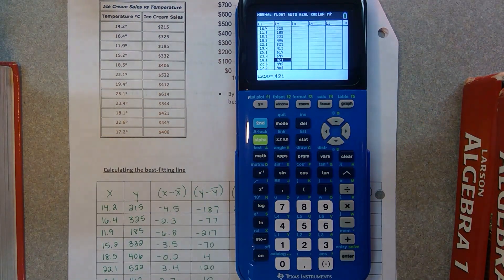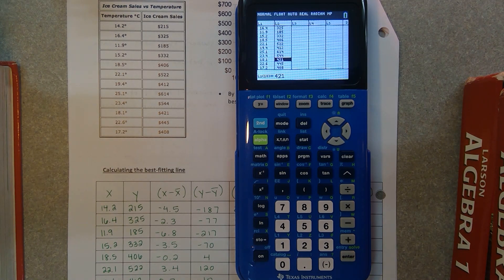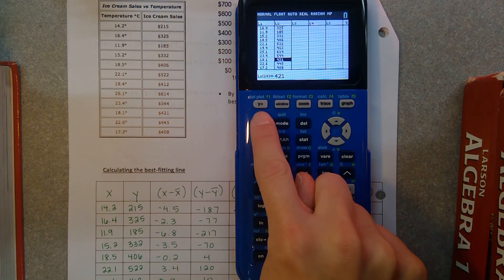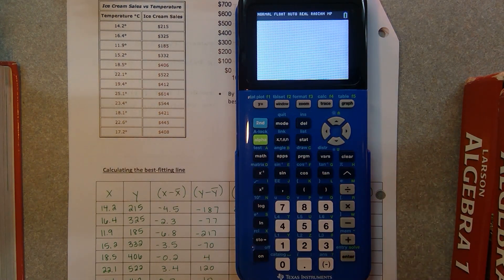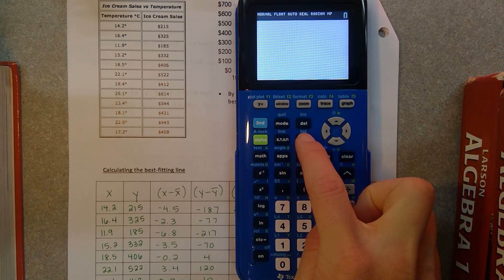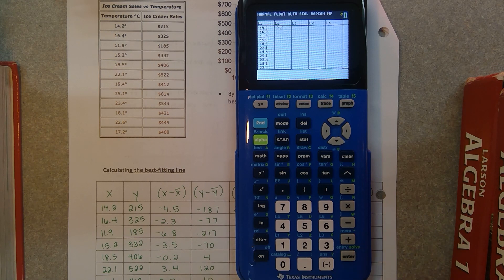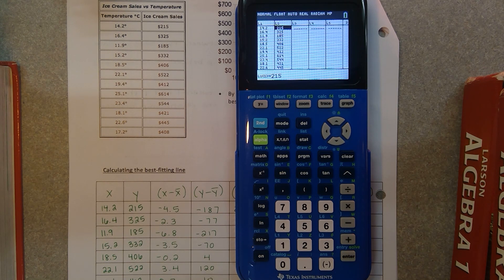So I have both my X and my Y values entered into the calculator. If you hit second quit and get out of that list, you're back in calculator mode. And it did not disappear, it's still in there. If you go back to stat, edit, see? There they are. They're still in there. Now what we need to do is we need to calculate the linear regression equation.